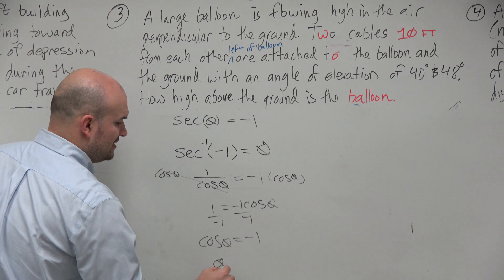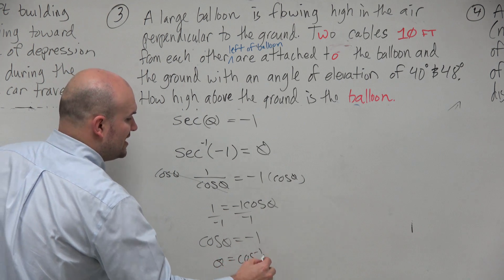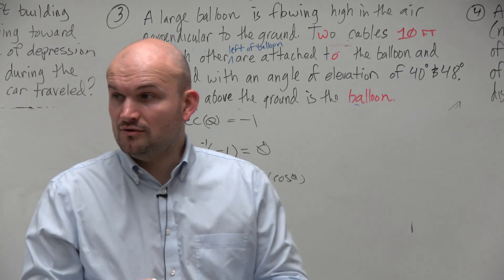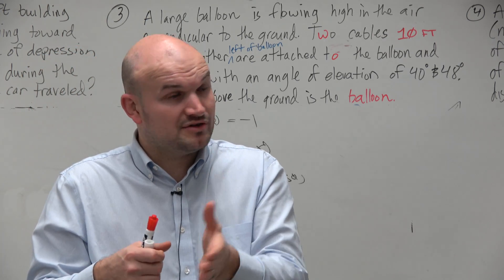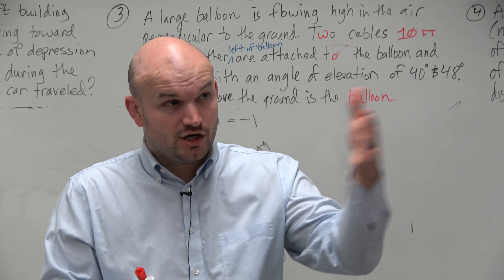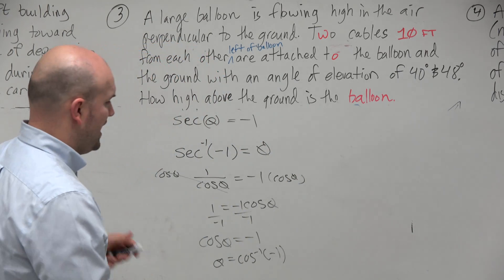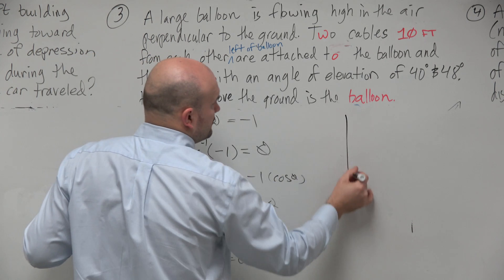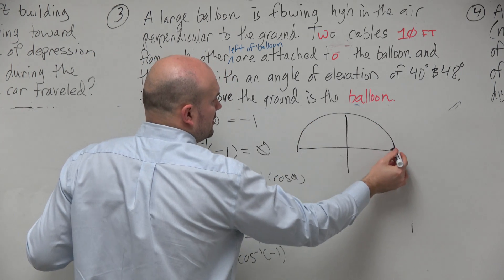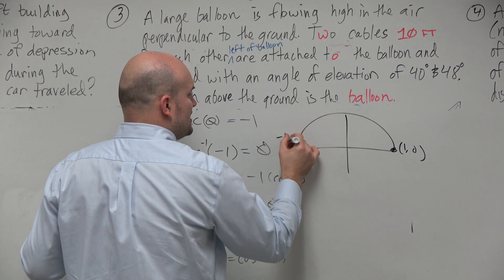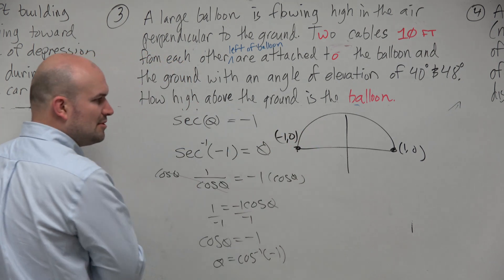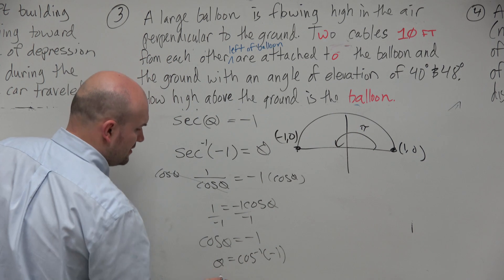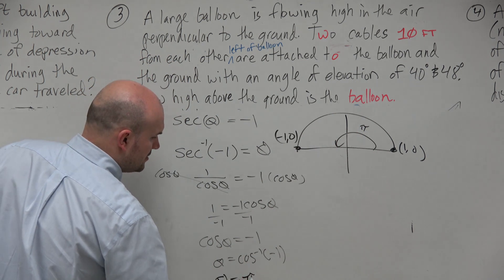And then obviously, we could say theta equals cosine inverse of negative 1. And now we just got to think, well, on the unit circle, with the domain restrictions, remember domain restrictions of cosine is between 0 and pi. What angle will give us negative 1 for cosine? This point is 1 comma 0. This point is negative 1 comma 0. Remember, cosine represents the x-coordinate. This angle is pi. So theta equals pi.